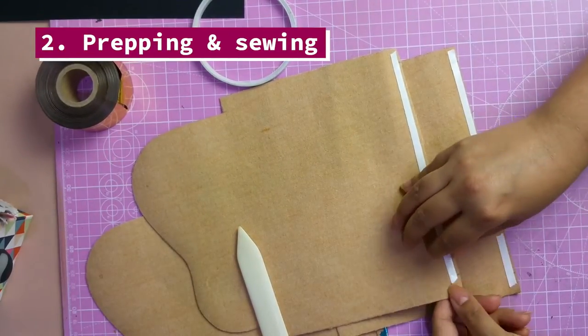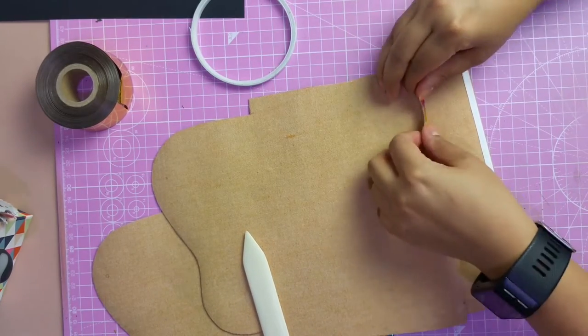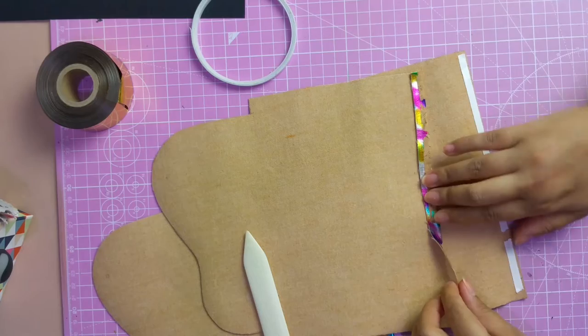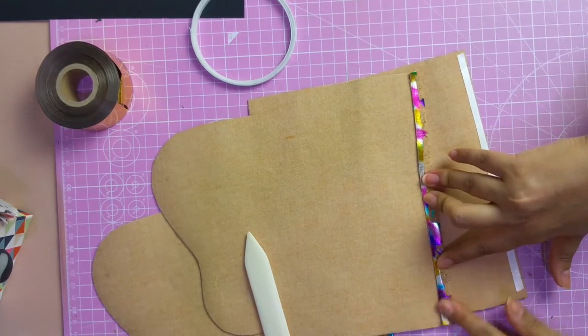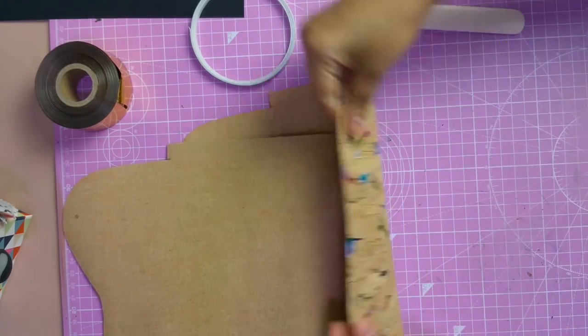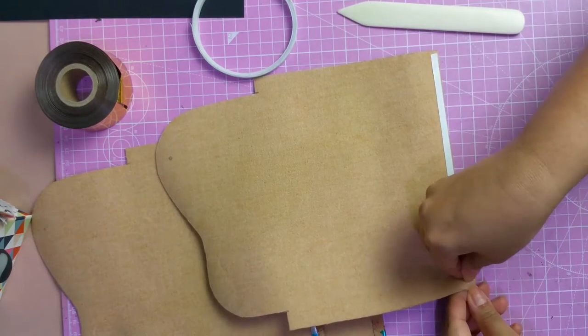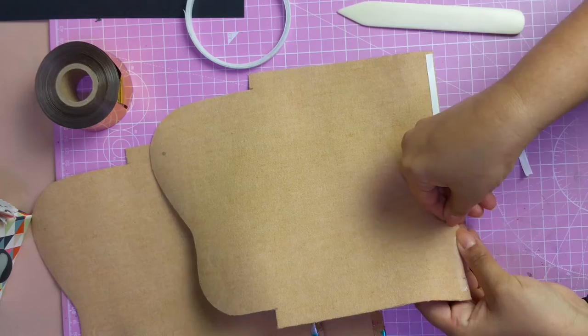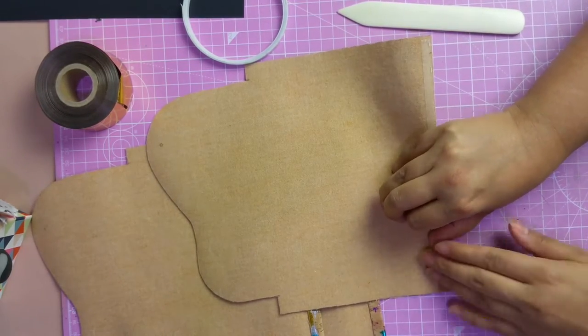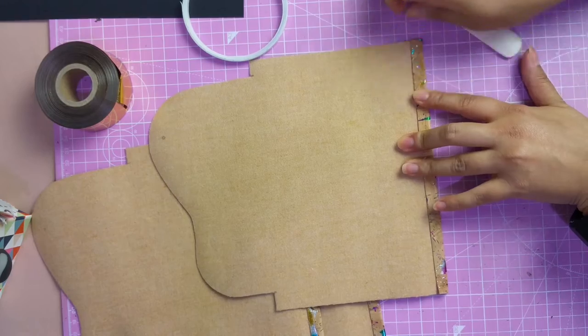Next, we want to fold in the raw edge so that we can sew it and have a lovely, nice, neat edge. To do this, I use double-sided tape. I paste it on one side. The one that I'm using is about half a centimeter, a little bit more than half a centimeter, and it just gives me the perfect width that I need. Once I have folded the fabric over, I use folding bones. Then I use a bit of pressure to keep it in place and make sure that it won't shift when I am sewing.